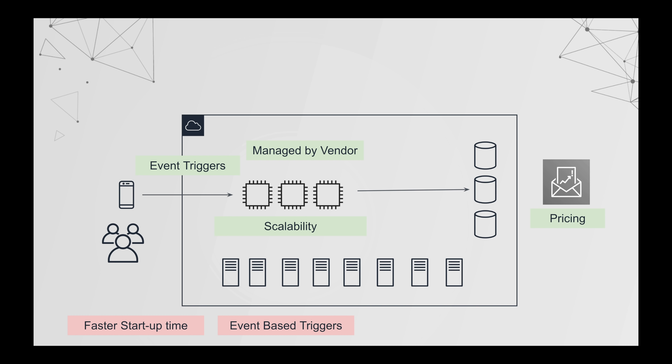The next consideration is event-based triggers. Not every application can react to events — there could be synchronous applications. However you need to make sure that your application is event-based and stateless. It is also cloud vendor based, so if you are creating a serverless architecture you cannot use the same architecture in every cloud platform. If you are integrating with AWS you might not be able to easily lift and shift into other platforms because they may have similar offerings but with different products.